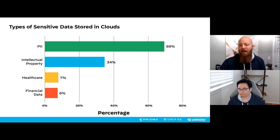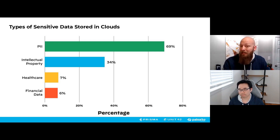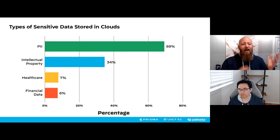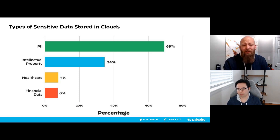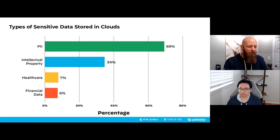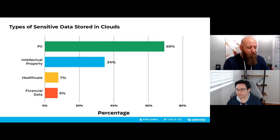What are we referring to as sensitive data? We're looking specifically at PII — names, IP addresses, physical addresses, and similar identifiers. Intellectual property includes source code material. Healthcare data includes which hospitals people visit. Financial data includes credit card information. Importantly, healthcare and financial data, both highly regulated, show up comparatively less in exposed data — which is actually good news, suggesting that regulation is having a positive effect in keeping those categories better protected.